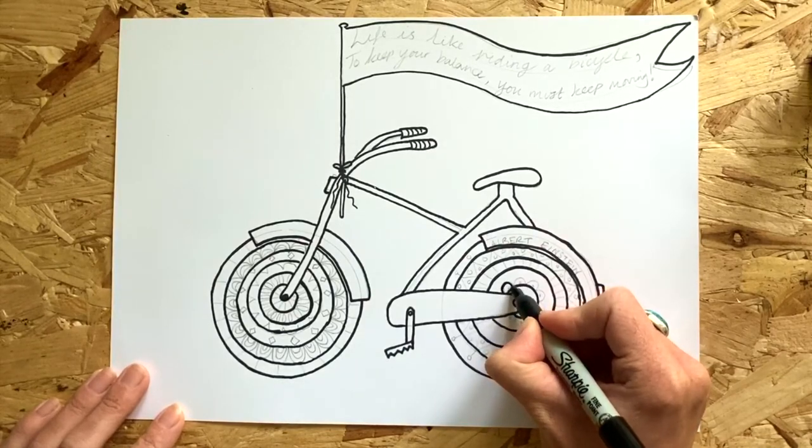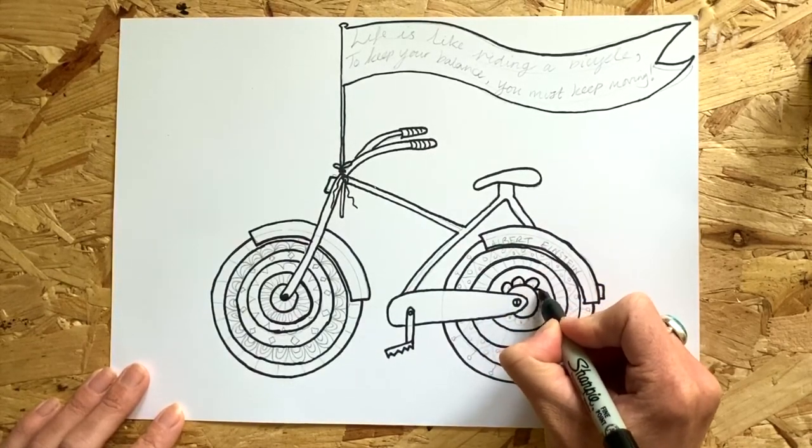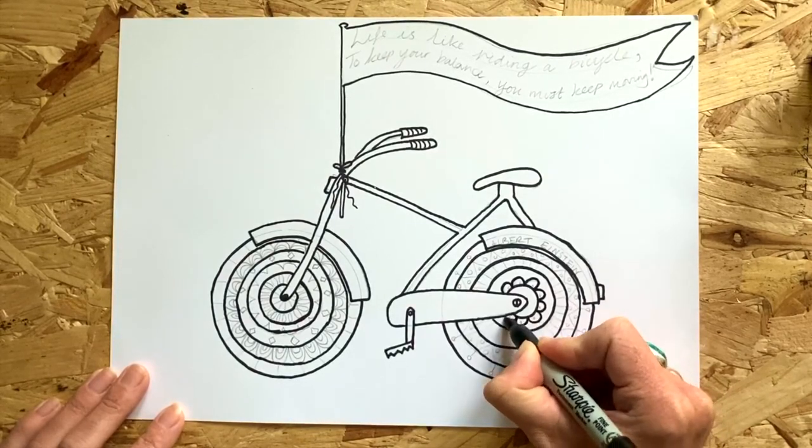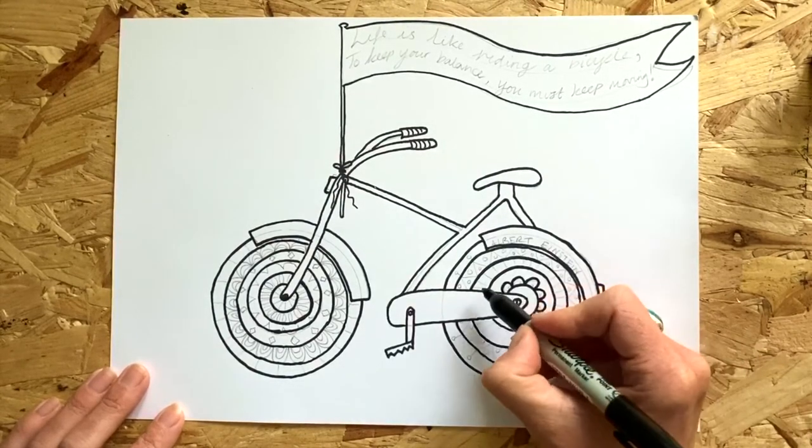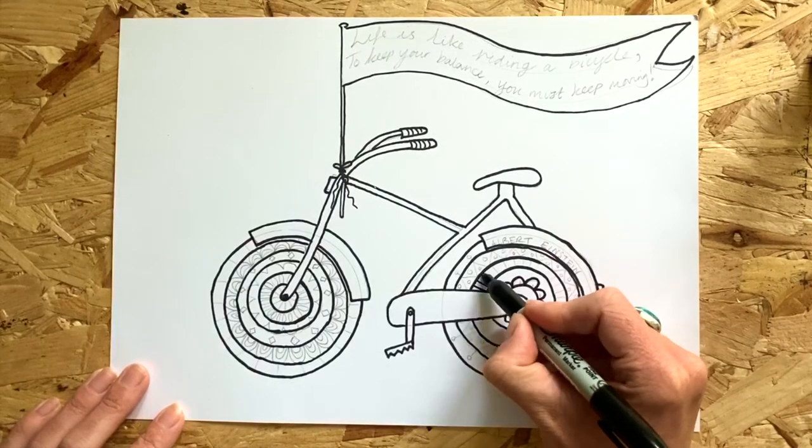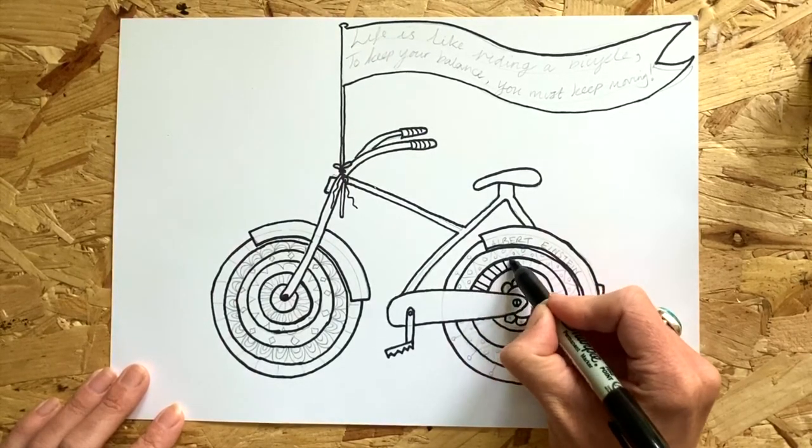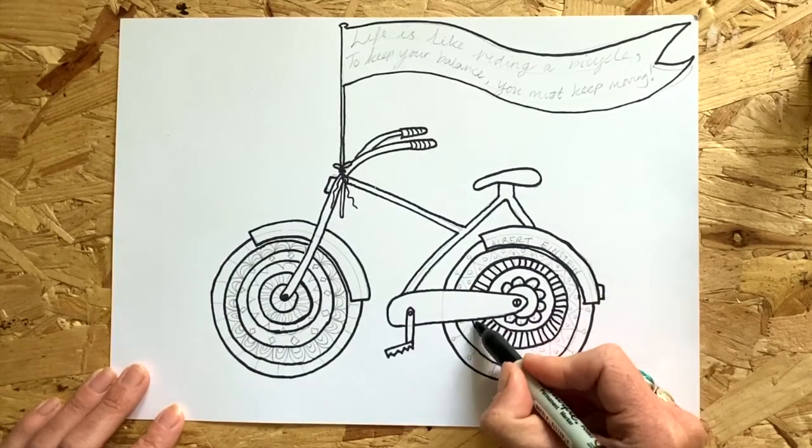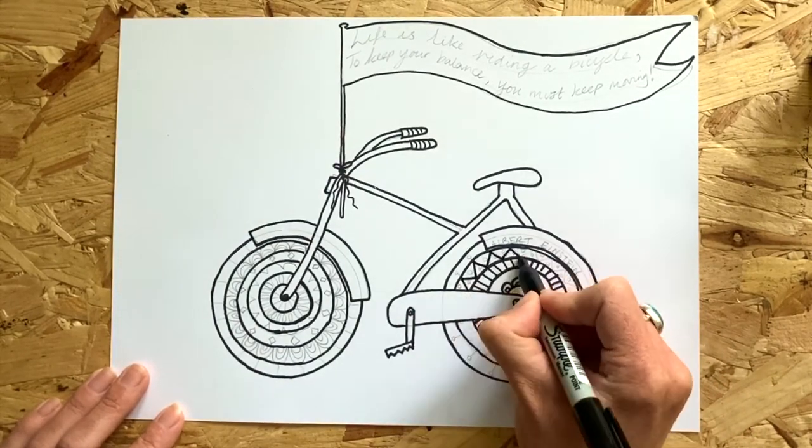Carefully outline your mandala pattern. Use a finer tipped pen, such as a biro, if you think you're going to find it difficult to draw the detail in your mandala pattern. Keep going until you've completed your whole bike.